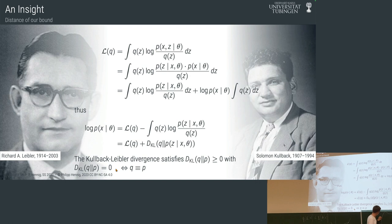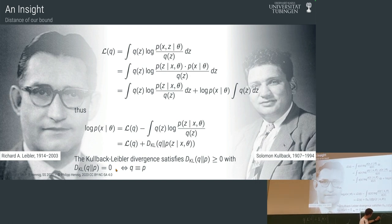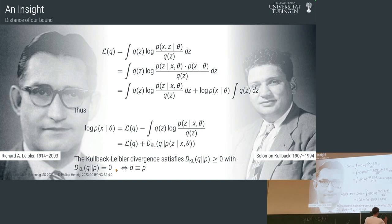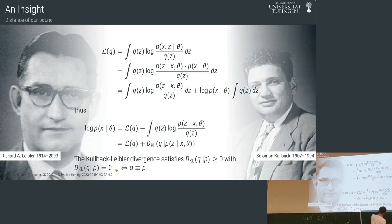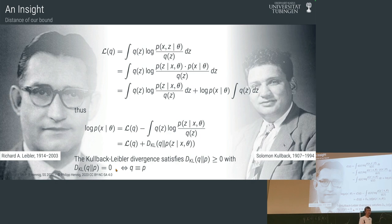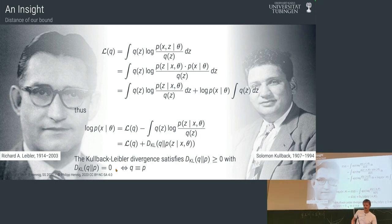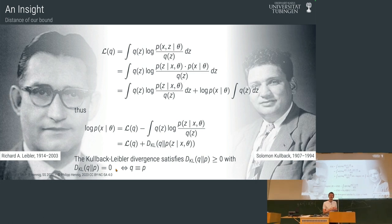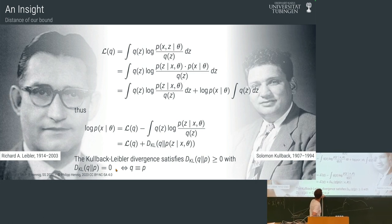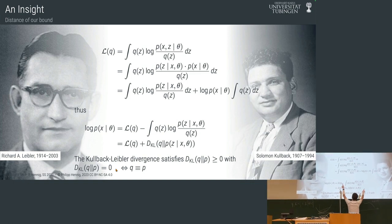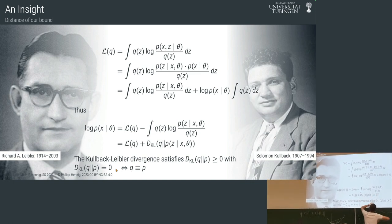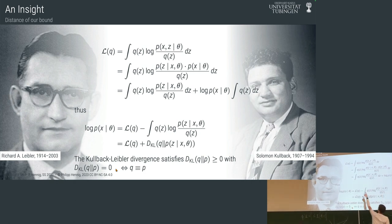So what we do when we do EM is iterate between building a simple function L as an approximation to the evidence, which has the property that at the current location theta it has exactly the correct value, and has a shape that will always be below the evidence. Then we take a step to some better point, then recompute a new lower bound on the evidence and repeat.